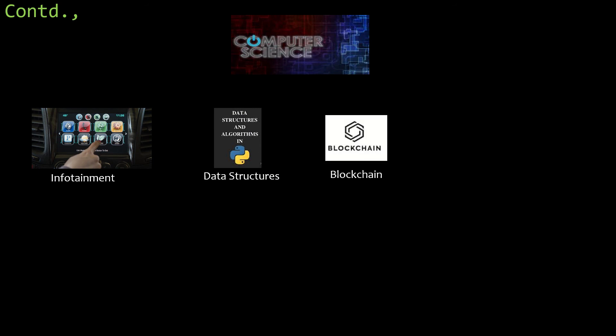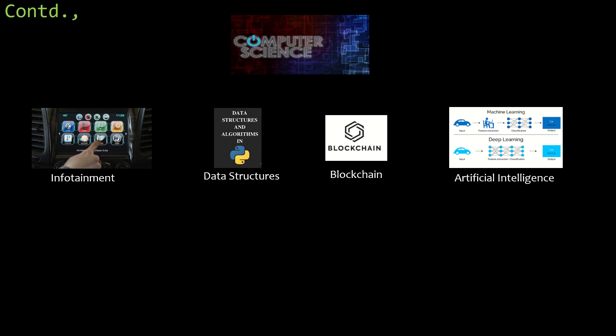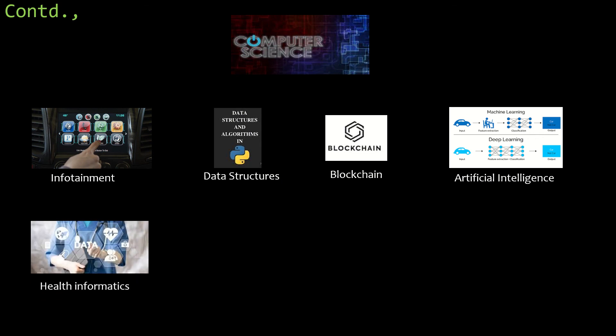Blockchain is the most secure technology and is growing rapidly. Once your data enters the blockchain, it becomes non-tamperable, and there is a lot of research going on in this area with significant future growth. Artificial intelligence is a collection of multiple subjects: machine learning, deep learning, and NLP (natural language processing). You will learn how to make a machine think like a human — making decisions and acting on them — and this study will give you all the details.